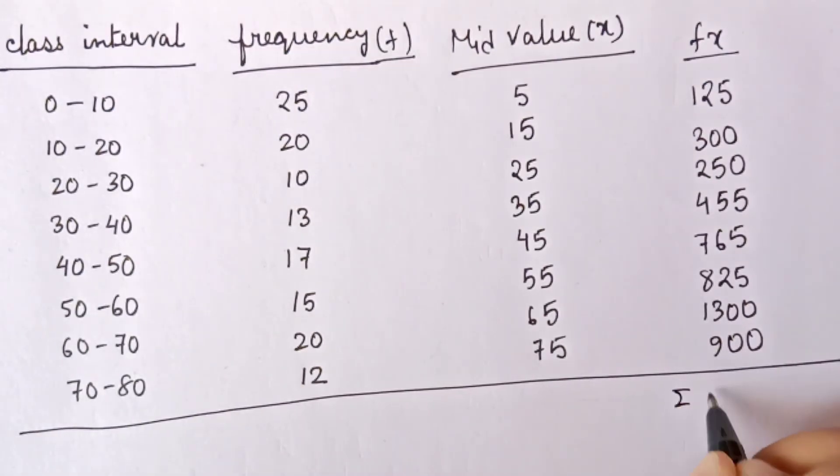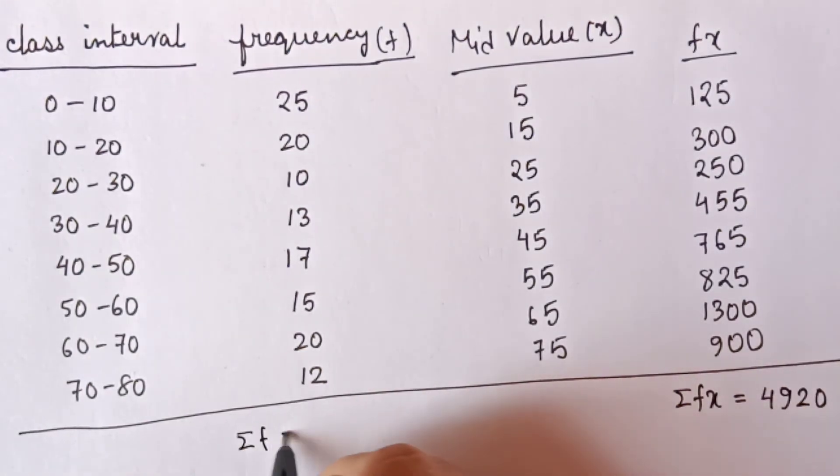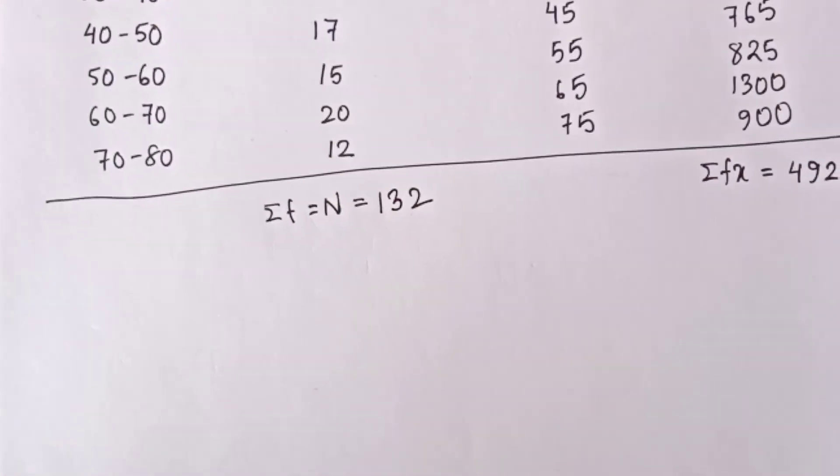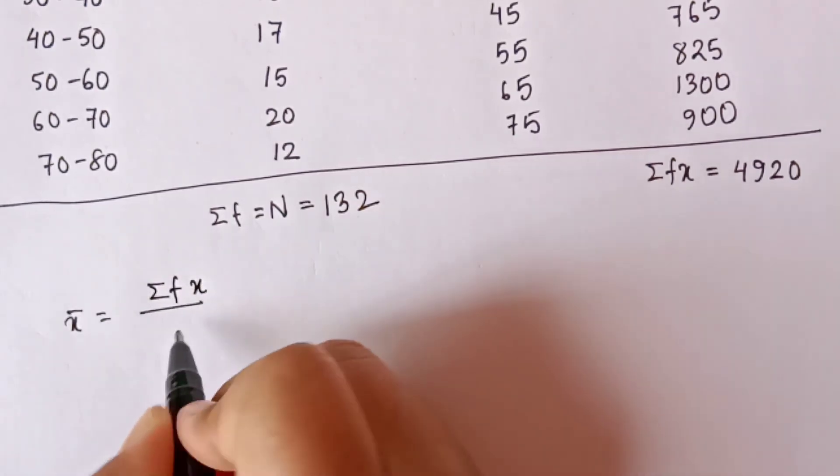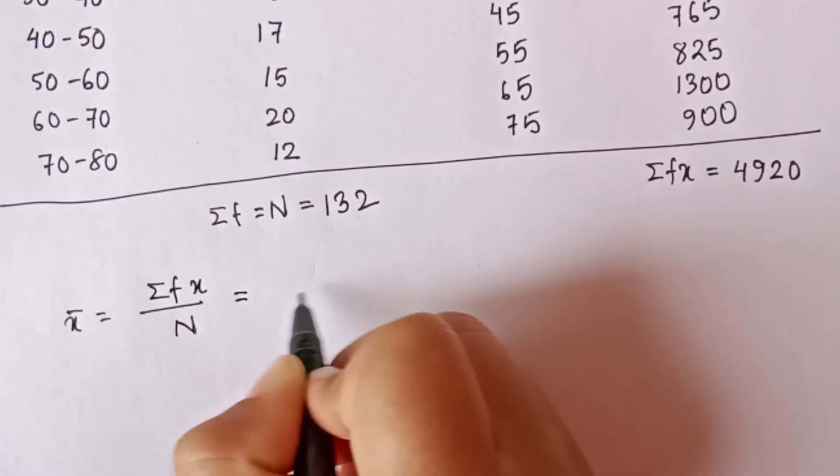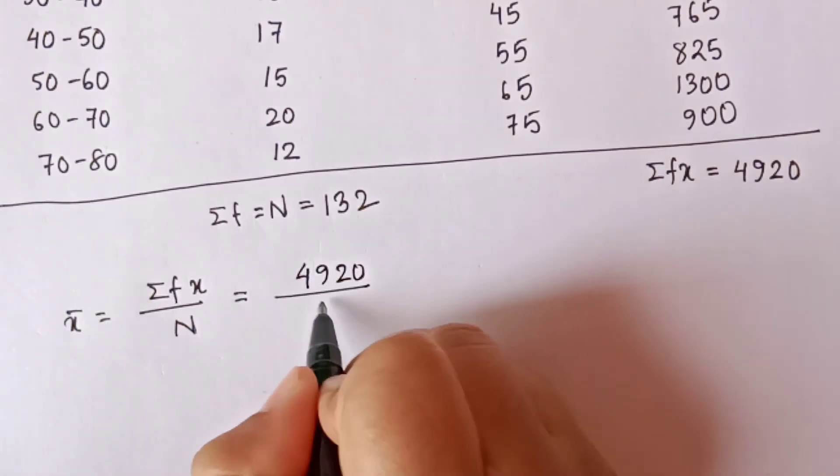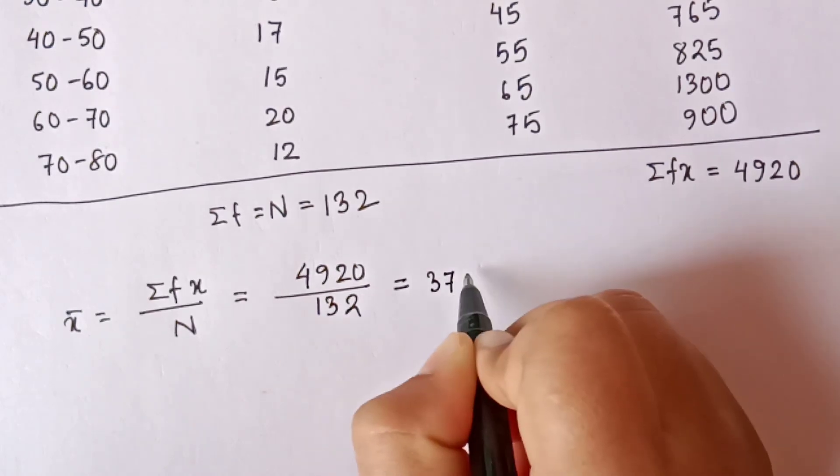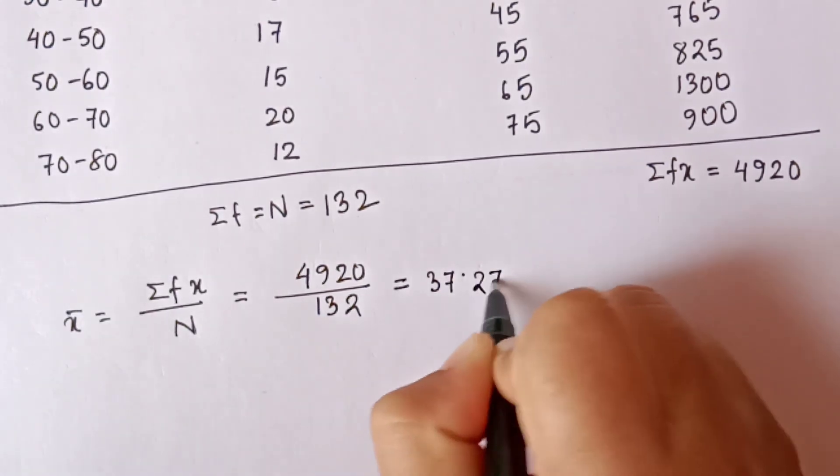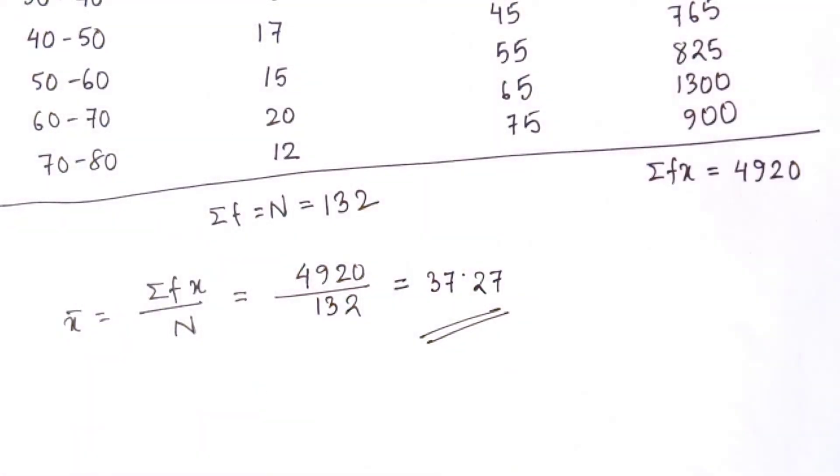Then find out the summation of FX value. It is equal to 4920, and also find out summation of F denoted by N, which is 132. Now use the formula: X bar equals summation of FX divided by N. 4920 divided by 132, which is equal to 37.27.